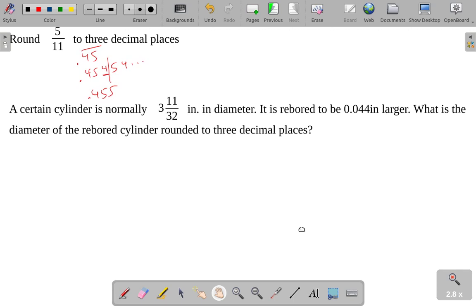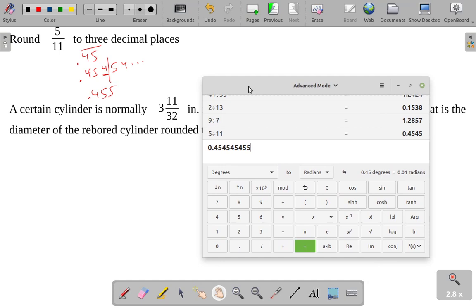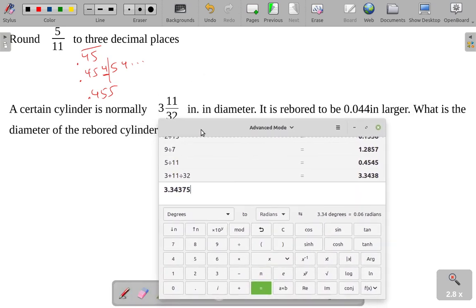A certain cylinder is normally three and eleven-thirty-seconds inch in diameter. It is rebored to be .044 inches larger. What is the diameter of the rebored cylinder rounded to three decimal places? I mean, this one looks like we're going to get... We start out with a mixed number, which, putting the mixed number into the calculator, I'll do like this. I'll do three plus eleven-thirty-seconds. You can see that's 3.34-whatever. I'm going to be reboring it so that it's .044 inches larger, so I'll just add on .044.